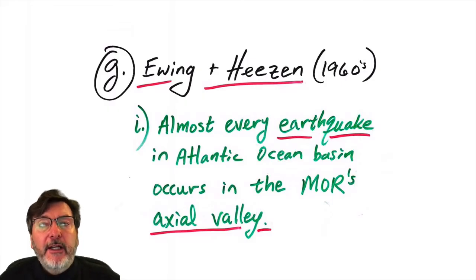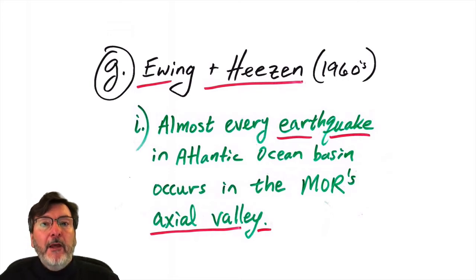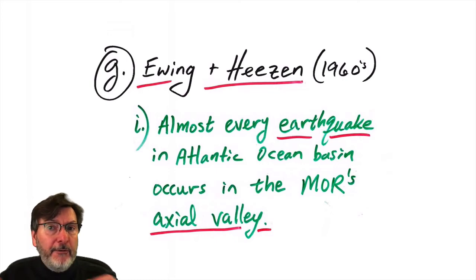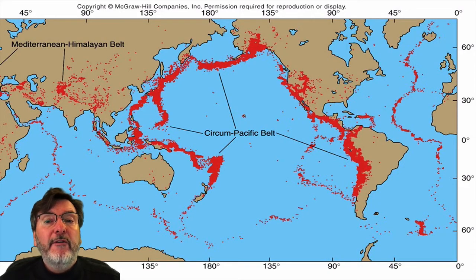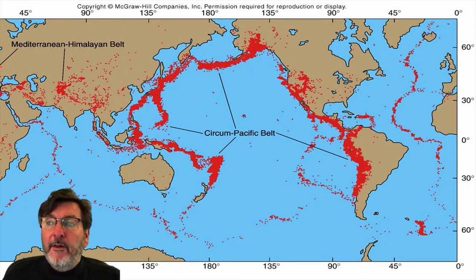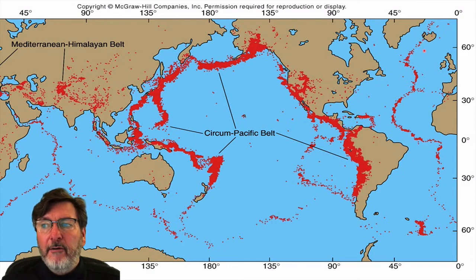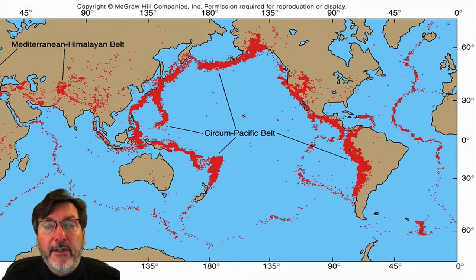People started to realize that possibly the axial valley system of the mid-ocean ridge is analogous to the East African rift system. Finally, Ewing and Heezen in the 1960s used more accurate global seismic data from global seismic networks to plot earthquake epicenters. In the Atlantic, almost all of them fall in the axial valley of the mid-ocean ridge — concentrated in the axial valley system, which is a really remarkable finding. There are a few along the transform faults, but largely concentrated on the axial valley.